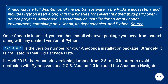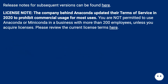2-4.4.0.1 is the version number for your Anaconda installation package. In April 2016, the Anaconda versioning jumped from 2.5 to 4.0 in order to avoid confusion with Python versions 2 and 3. Version 4.0 included the Anaconda Navigator. License note: the company behind Anaconda updated their terms of service in 2020 to prohibit commercial usage for most uses. You are not permitted to use Anaconda or Miniconda in a business with more than 200 employees unless you acquire licenses. Please review the current license terms.